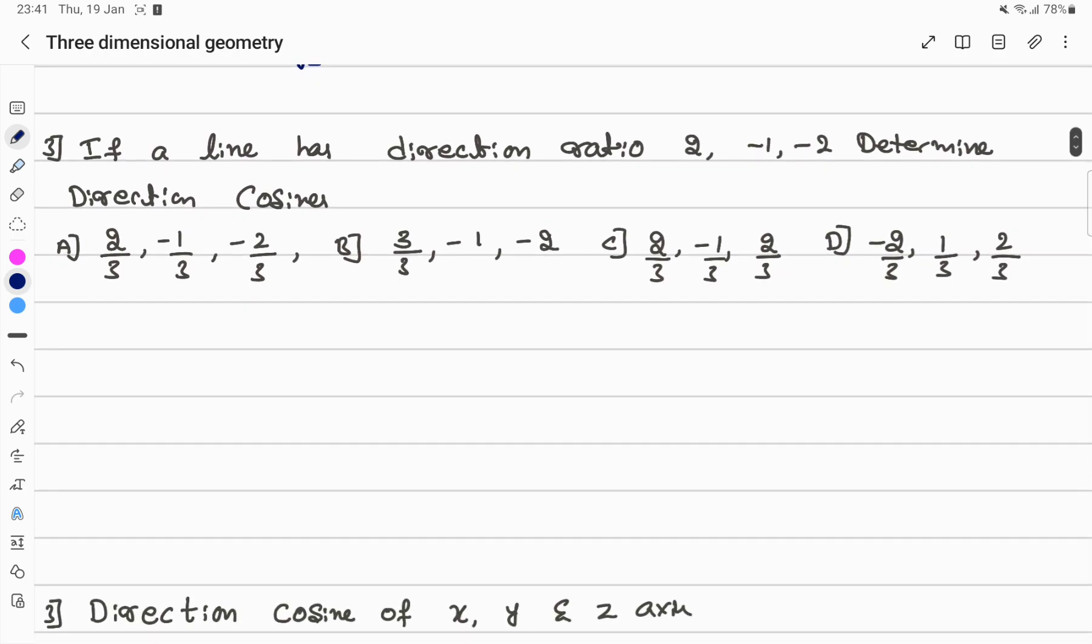Next question. Direction ratios of a line are given. We have to calculate direction cosines. To find the magnitude, we use A square plus B square plus C square. Here 4 plus minus 1 whole square is 1, minus 2 whole square is plus 4. It gives root 9, which equals 3. If I take this quantity as magnitude, ABC by magnitude gives direction cosines. That is 2 by 3, minus 1 by 3, minus 2 by 3. So option A is the answer for this question.